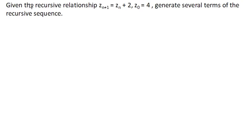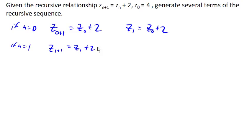Now this is called a recursive sequence because the next term depends upon the previous one. So for example, if n is 0, this formula would tell me z_1 equals z_0 plus 2. And if n was 1, it would tell me z_2 equals z_1 plus 2. So notice that the next term can be determined by taking the previous term and adding 2.